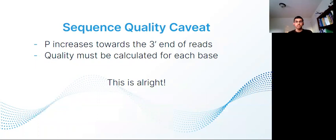However, we can't just find the quality for the entire sequence using one calculation. P increases towards the three-prime end of reads, so we must calculate the quality for each base. If the quality is too low, one should remove that base to improve mappability. This is fine, though. Even if one or a few bases are removed from one end, the alignment algorithms will still work properly.